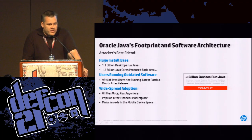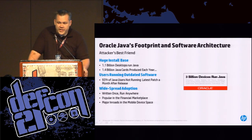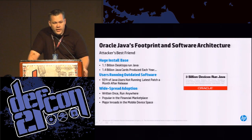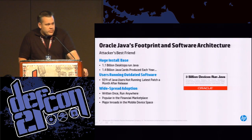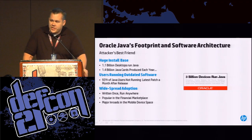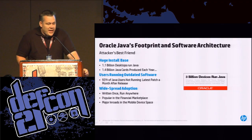If we look at the footprint of Java, it has a huge installation base and that's what makes it a big red target for attackers — and Oracle actually boasts about it during the installation process. Three billion devices run Java. According to Oracle, 1 billion desktops actually run Java itself and somebody produces 1.4 billion Java cards every year. I have no idea what a Java card is but I'm pretty sure it can't be updated and if it's running any part of Java, it's probably got a vulnerability in it.